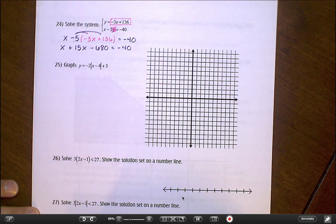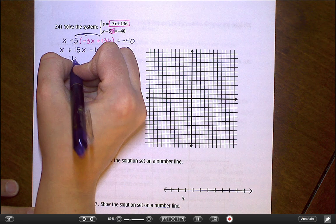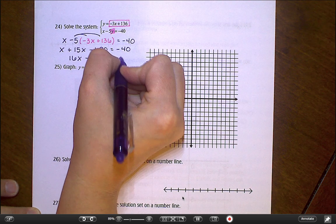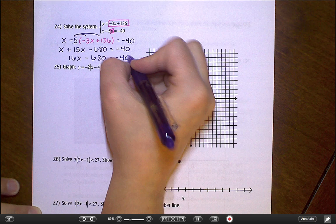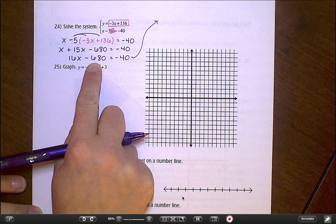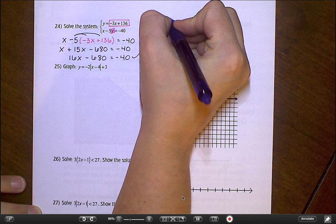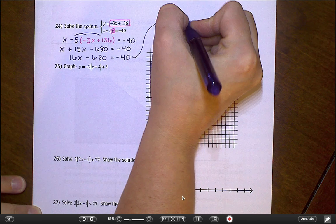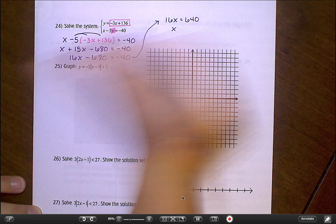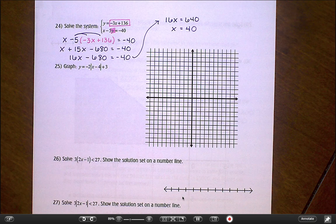And then that equals negative 40. Probably the first thing I would do from here is get my x's together. So x plus 15x gives me 16x. I'm going to add 680 to the other side. So when I add 680 to negative 40, I'm going to get 640. So 16x equals 640. And then when I divide, 16 goes into 64 four times, so I believe I'm going to get 40 here as an answer for x.